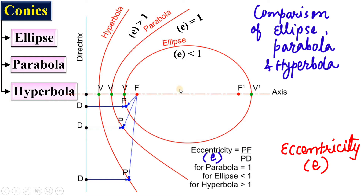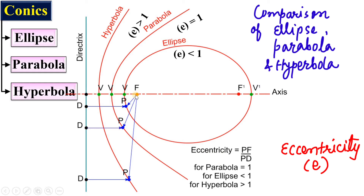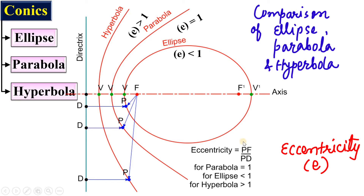Try to understand the eccentricity with respect to this figure. Eccentricity is actually the ratio of the distance of the moving point from the focus point to the distance of the moving point from the directrix — that is, PF divided by PD. In case of the ellipse, PF is less than PD, and that is why eccentricity is always less than 1.